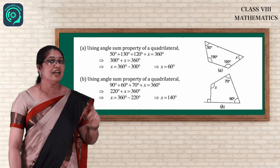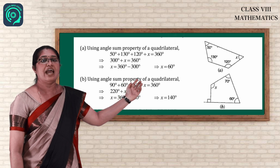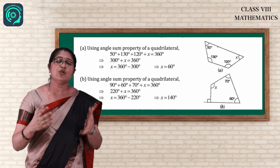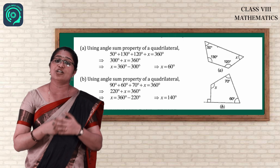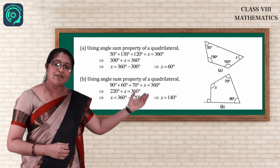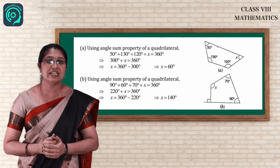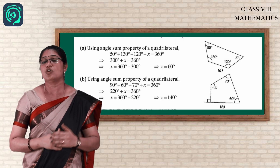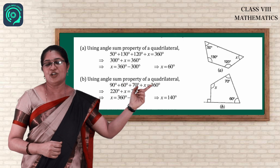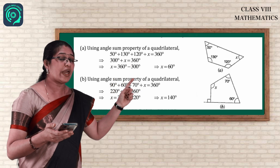Now let us do a problem using the property of a quadrilateral. You know that the total sum of angles in a quadrilateral is 360 degrees. In this picture, the angles are 50 degrees, 130 degrees, 120 degrees, and one unknown angle x. To find x: add the known angles — 50 plus 130 plus 120 equals 300. Then x equals 360 minus 300, which is 60 degrees.